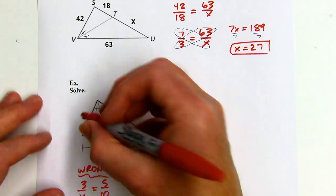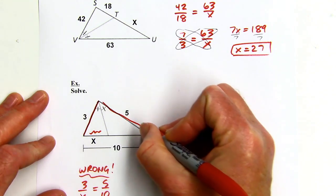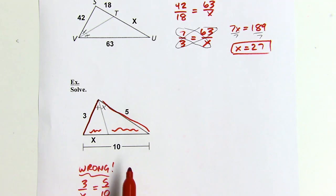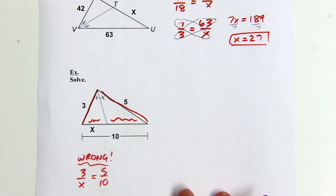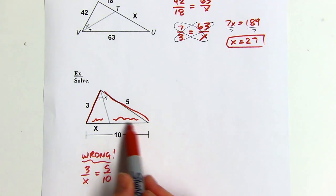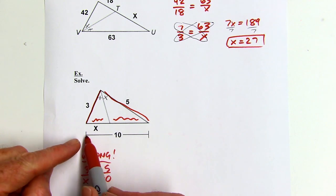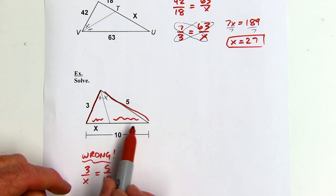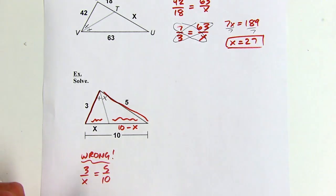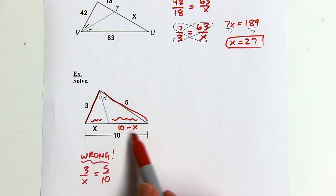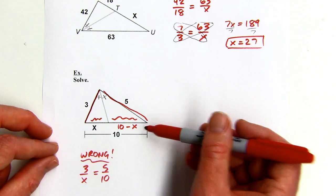3 is to its corresponding piece as 5 is to the other piece, but 10 is the whole length, not just the right piece. So I need to name that right piece. The whole thing is 10 and the left piece is x, so the right piece is 10 minus x. Now I can set up the correct proportion: 3 is to x as 5 is to 10 minus x.